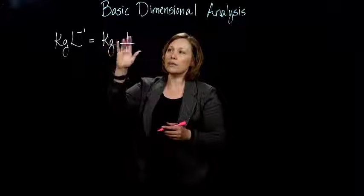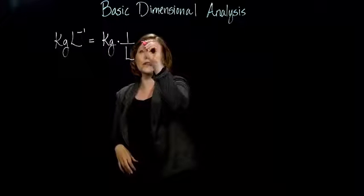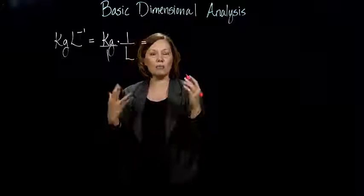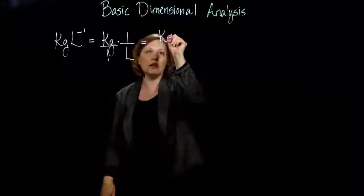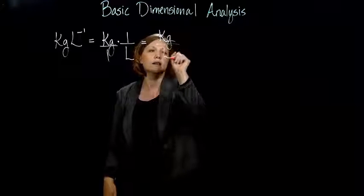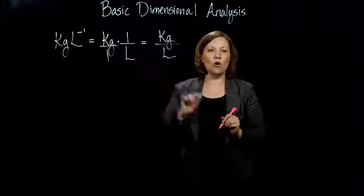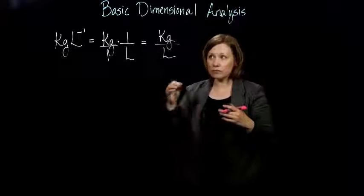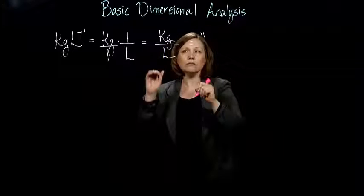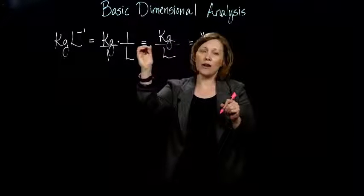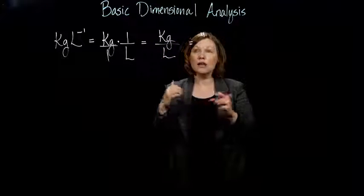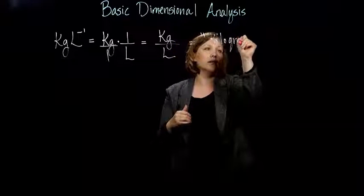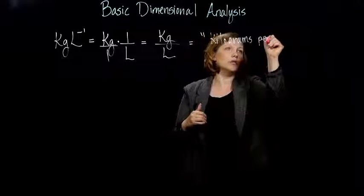So kilograms times 1 over liters. Well, you could think of this as over 1. If we do that multiplication, we get kilograms over liters. Or if we're thinking about this fraction as a per, right, we could think about this as kilograms per liter.